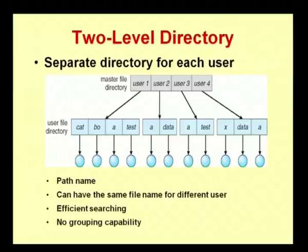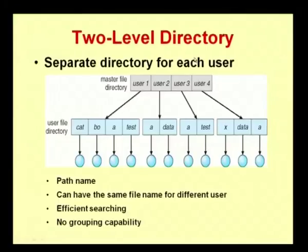Two files also cannot be grouped because everything is inside a single folder. All files have to be stored separately. The two problems that arise from a single level directory are: one is naming problem, and second is a grouping problem. In a two level directory, you have a master file directory and a user file directory. Inside the user file directory you have your set of files. For example, a directory called 'question bank' can contain a 'questions' folder and an 'answers' folder, each with their respective files. A two level directory has efficient searching but no grouping capability.